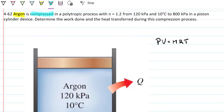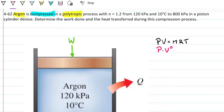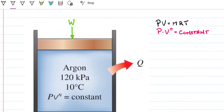Then we're compressing our gas. What does that mean? It means I am taking this piston cylinder device and pushing down on it, so I'm doing work to my system — putting energy into my system in the form of work. Then, polytropic process — by definition, that means the pressure times volume to the exponent N is going to be a constant. That's what a polytropic process means.